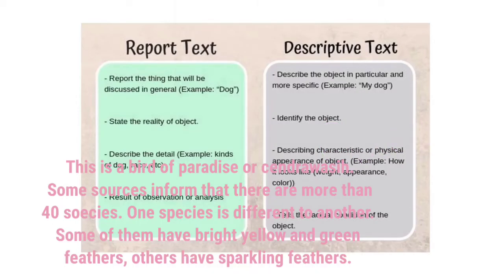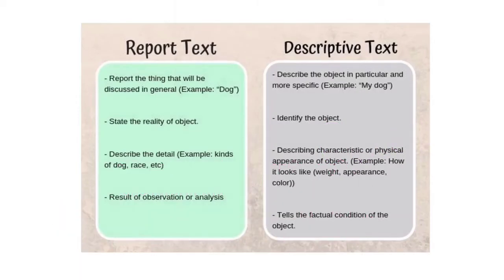Report text itu hampir mirip dengan descriptive text. Nah, bedanya dimana? Kalau report text itu dia mendiskusikan atau membahas sesuatu secara umum. Contoh misalnya anjing. Nah, anjing itu ada macam-macam jenis yang disebutkan di dalam text itu, misalnya anjing pelacak, anjing peliharaan dan lain-lain.